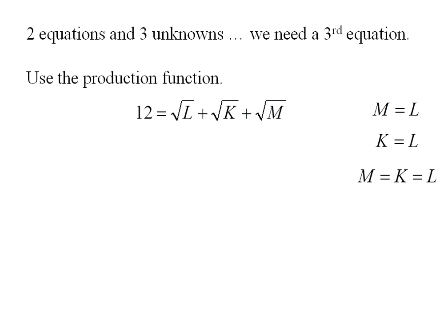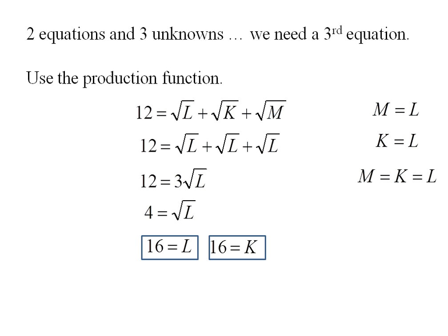So I can make those substitutions and say M equals K equals L, or 12 is square root of L plus square root of L plus square root of L. 12 is 3 times the square root of L. 4 equals the square root of L. Squaring both sides I get 16 is the optimal amount of labor, and that's also the quantity of capital and materials.